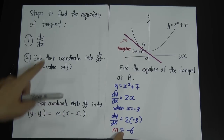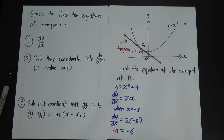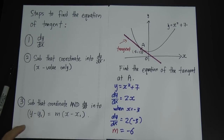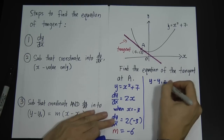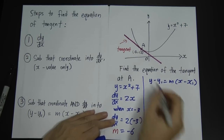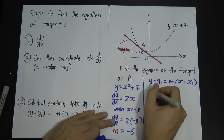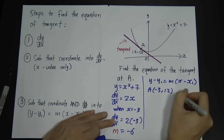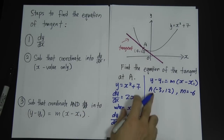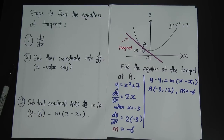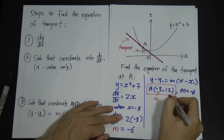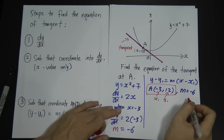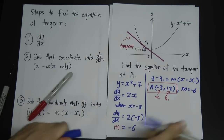After substituting the coordinate into dy/dx, we go to the third step: substitute the coordinates of point A and dy/dx, which is negative 6, into the formula y minus y1 equals m times x minus x1. I write down this formula now. My coordinate is point A: negative 3 and 12, and my gradient is negative 6. I call negative 3 as x1 and 12 as y1.